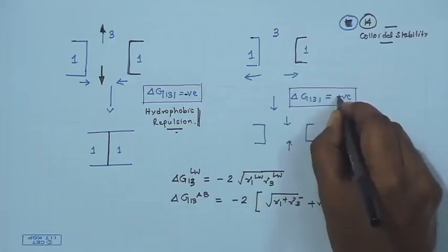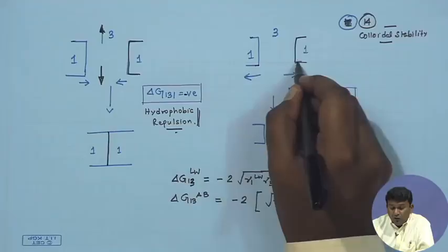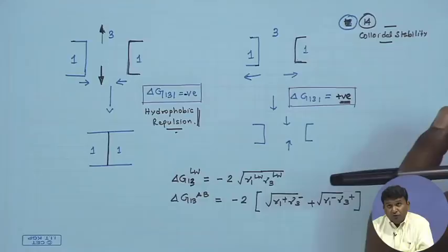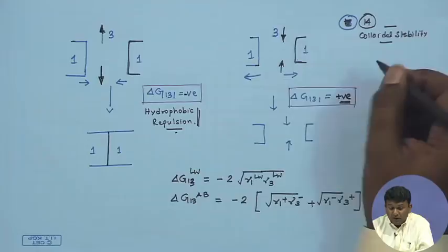If on the other hand the liquid is water and the colloids are stable — this is possible when ΔG₁₃₁ is positive — this leads to an outward motion of the two colloids. Even if you forcibly bring them together, they would like to go away from each other. This triggers an inward flow of water or liquid, and this is known as hydration pressure.